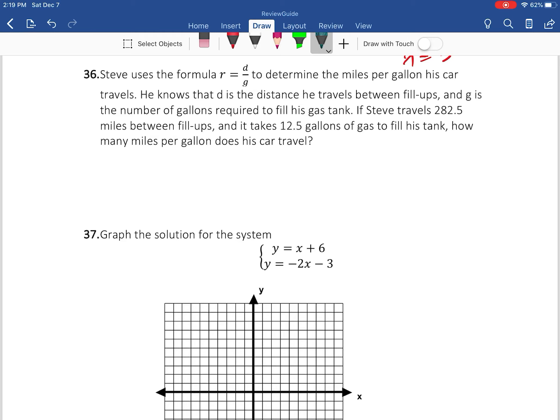Hello, okay. On this one we're going to do number 36. Number 36 is using the formula you're given. Steve uses the formula r equals d distance divided by the gallons to determine the miles per gallon his car travels. He knows the distance that he travels between fill-ups and g is the number of gallons required to fill up his tank.